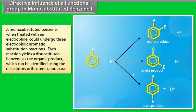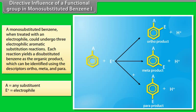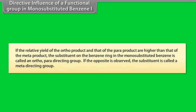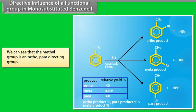Directive influence of a functional group in mono-substituted benzene. A mono-substituted benzene, when treated with an electrophile, could undergo 3 electrophilic aromatic substitution reactions, each yielding a di-substituted benzene product identified as ortho, meta, or para. If the relative yield of the ortho-product and para-product are higher than that of the meta-product, the substituent is called an ortho-para-directing group. If the opposite is observed, the substituent is called a meta-directing group. For example, the methyl group is an ortho-para-directing group.